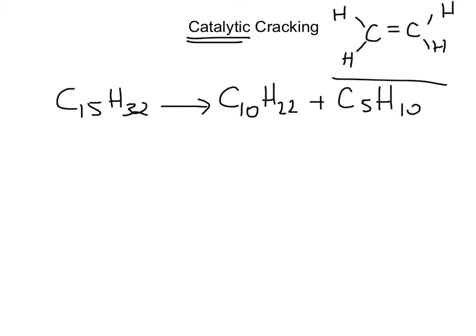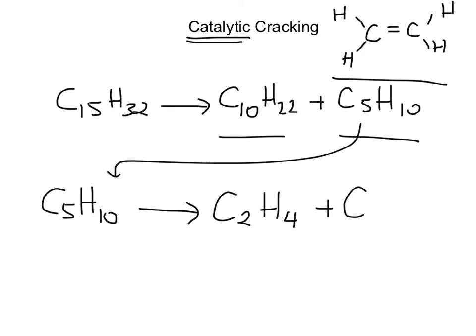We've created an alkane and an alkene. Now from here we still don't have ethylene. What we do is we take our pentane, so our C5H10. And again we use a catalyst to break this down into finally our ethylene and also whatever's left, our propene.